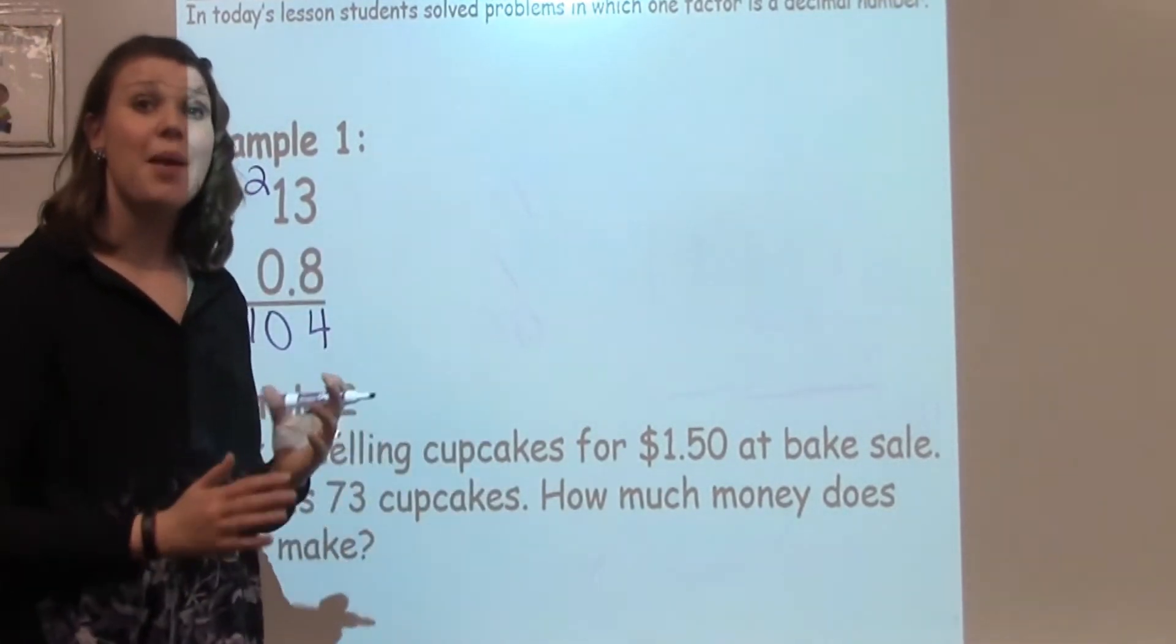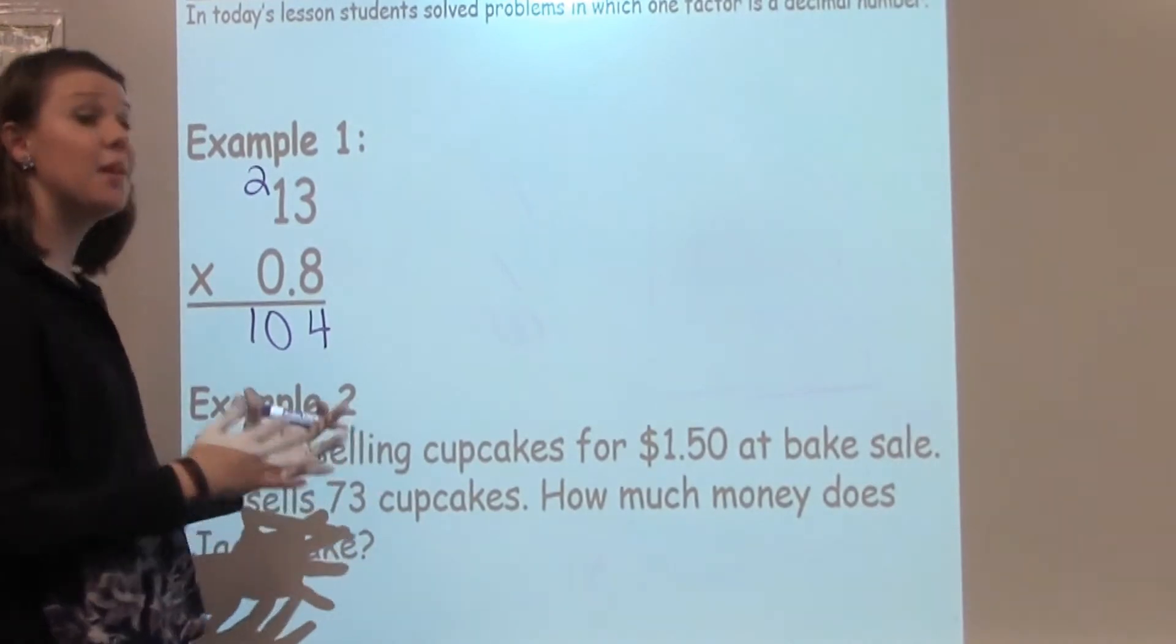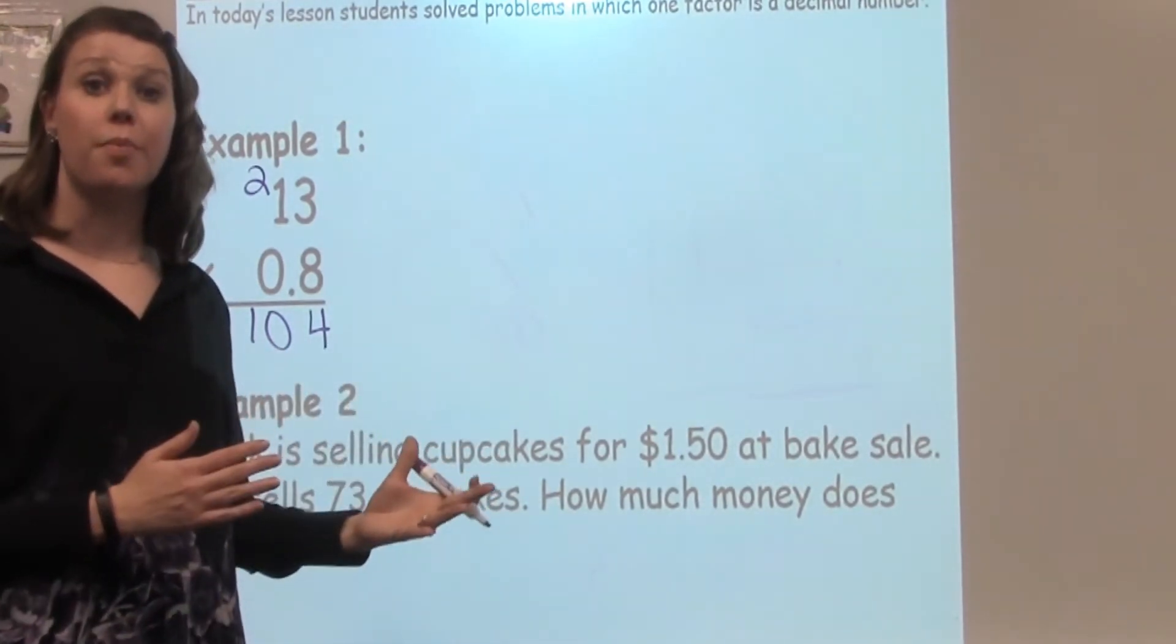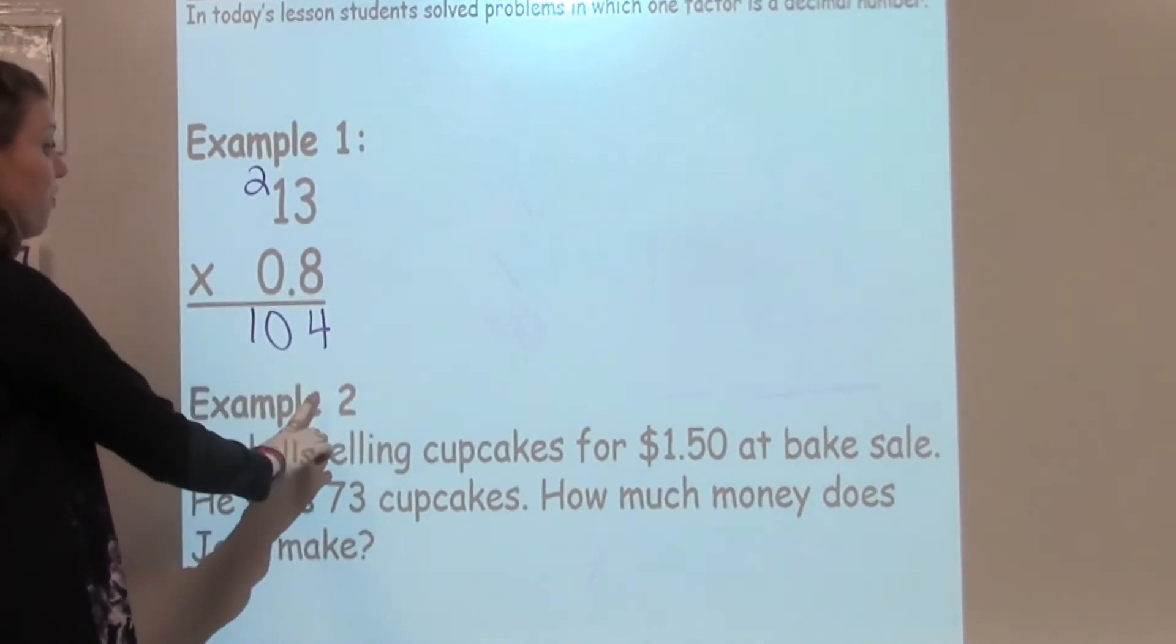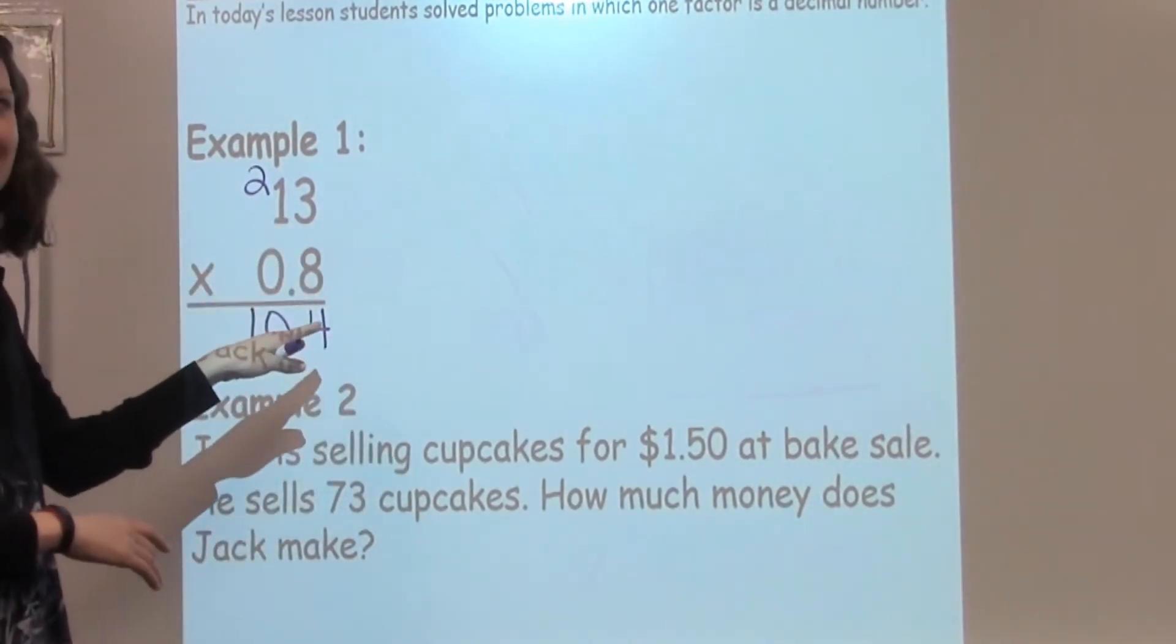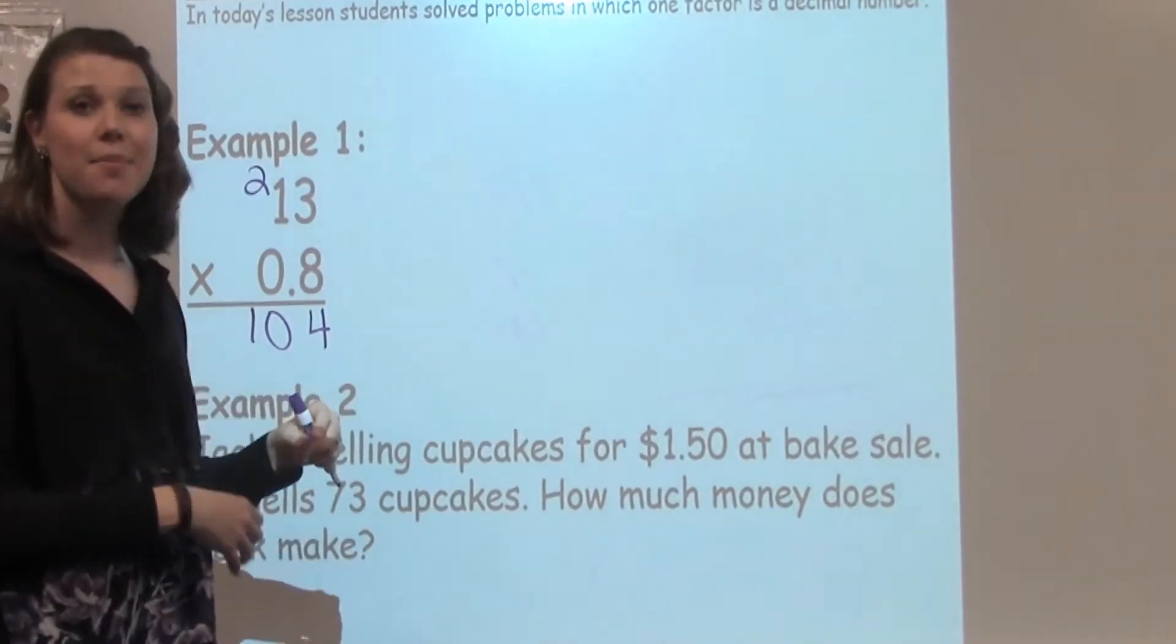Now, we've ignored the decimal up until this point, but now we need to go back and put it back. It's a really important step to remind your 5th grader to go back and put that decimal in. Otherwise, our answer is 104, which doesn't seem reasonable when I take 13 times 8 tenths.